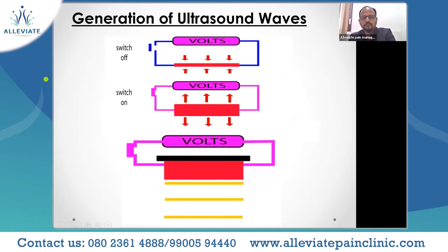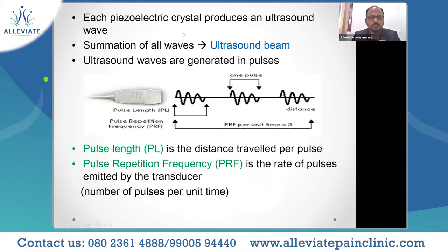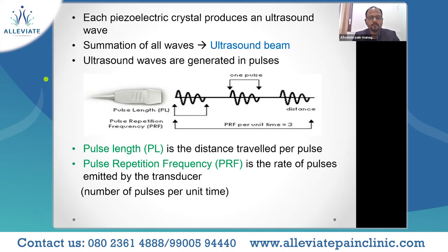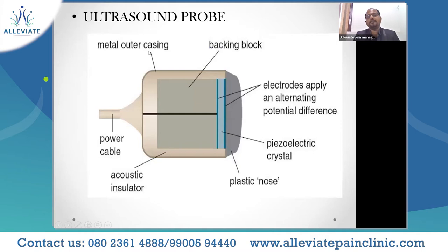Each piezoelectric crystal produces an ultrasound wave. The summation of waves from all those crystals produces the final ultrasound beam. The ultrasound waves are generated in pulses. Pulse length is the distance traveled by each pulse, and pulse repetition frequency is the rate of pulses emitted by the transducer — the number of pulses generated per unit time. Looking at the cut section of the common transducer: the most important element is the array of piezoelectric crystals in light blue, surrounded by electrodes which supply the alternating potential difference (voltage).